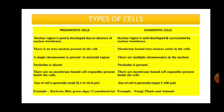Eukaryotic cells are the advanced type of cells. Their nuclear region is well developed and surrounded by a nuclear membrane, so a membrane-bound true nucleus is present. This true nucleus also contains a nucleolus and multiple chromosomes. The cell also has membrane-bound organelles which perform different functions. The size of a eukaryotic cell is comparatively much larger, ranging from 5 micrometers to 100 micrometers. Examples include cells of plants, animals, and humans.